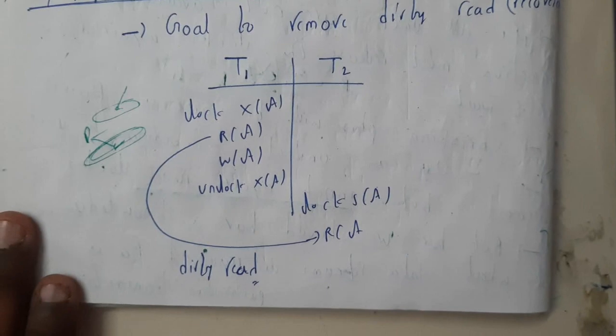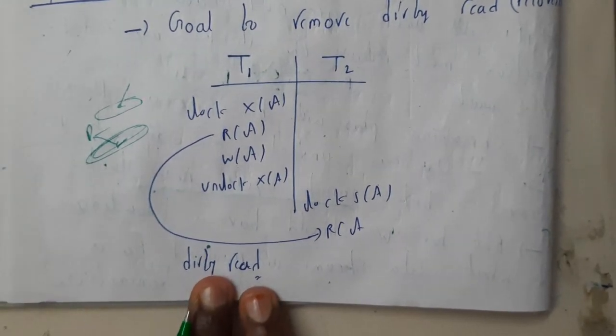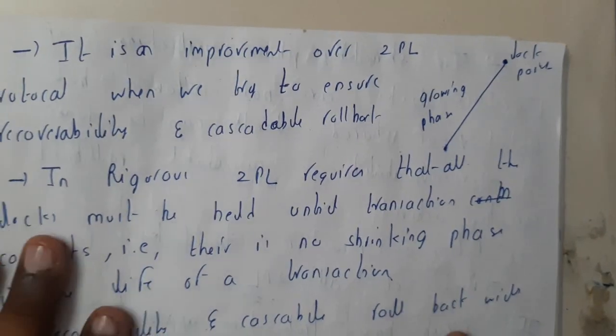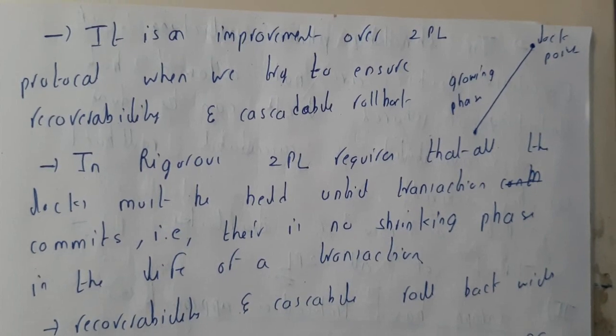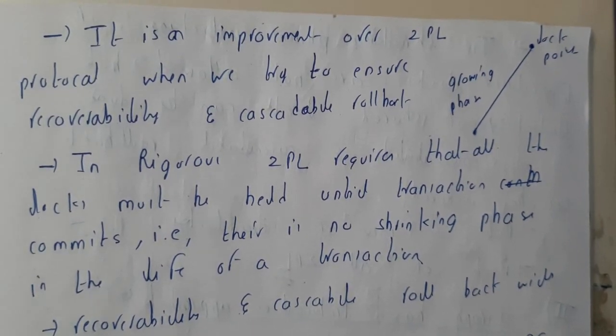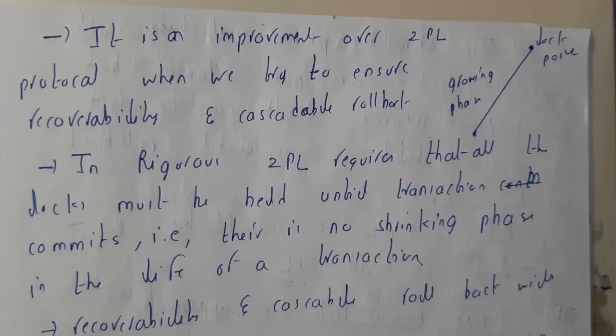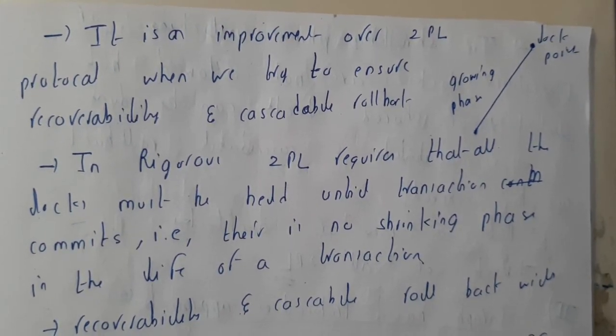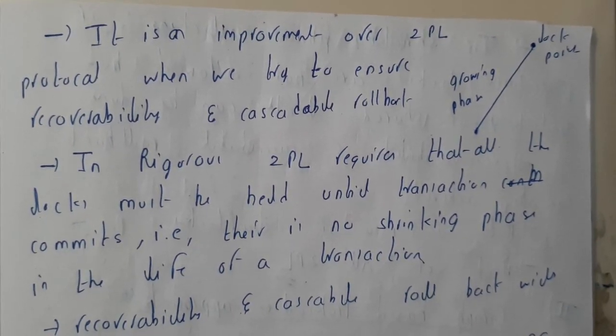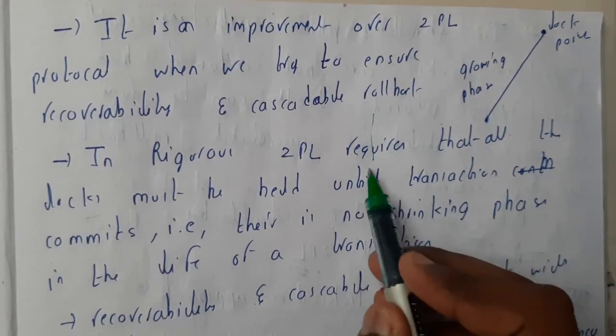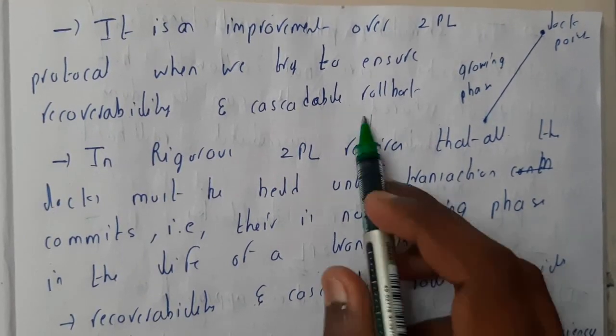This is a situation where dirty read comes into play. How can we rectify this? We use the concept of commit. Commit means saving what we have done till now. Once you write and then commit after some transactions, it will save till there.